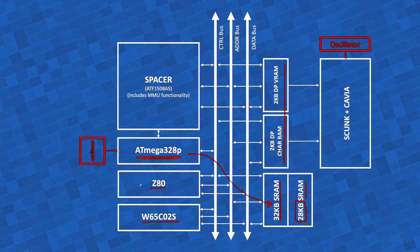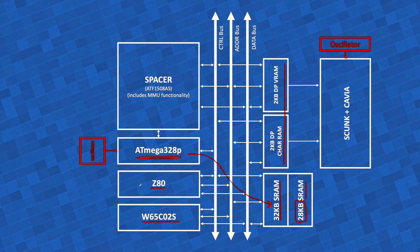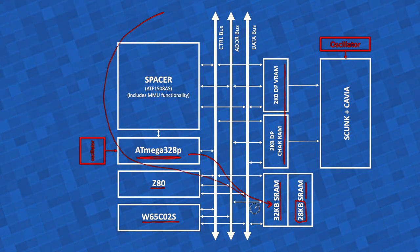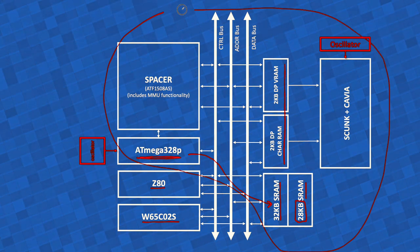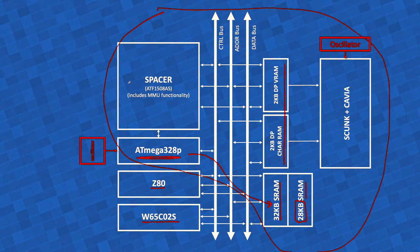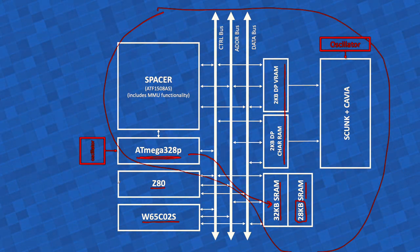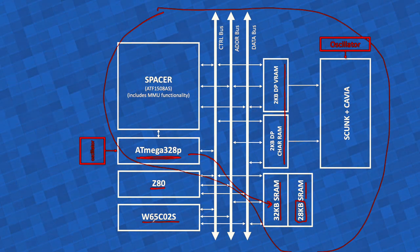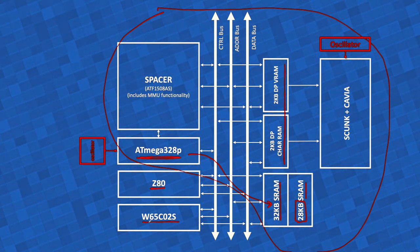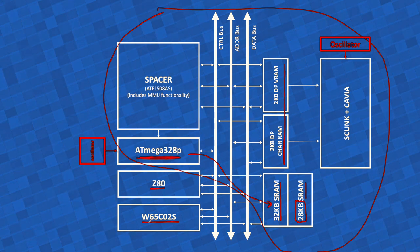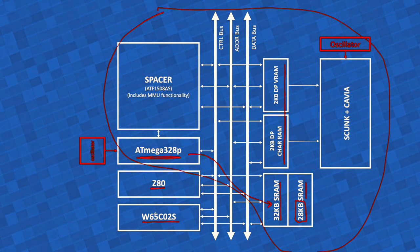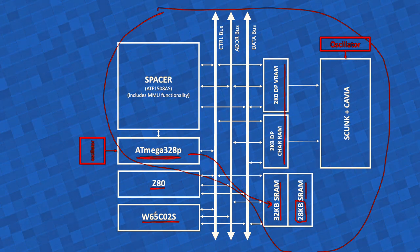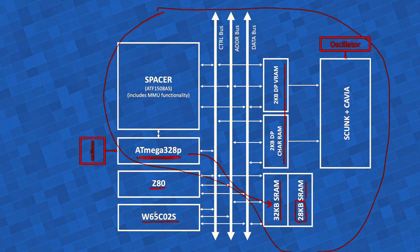At least that's what I'm thinking right now. But since the rest of the architecture is so flexible and can do so many things, it would seem like a pity to put just a Z80 in there and shut the 6502 assembly programmers out of the party. So we are going to put both in there and people can have fun with either one of them.